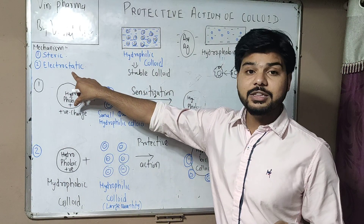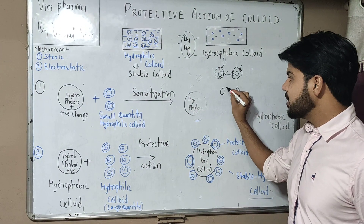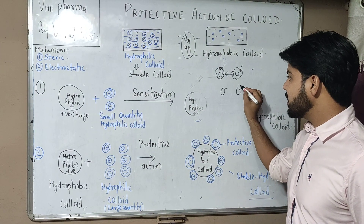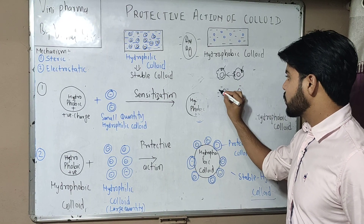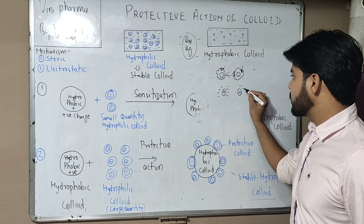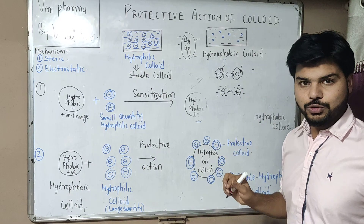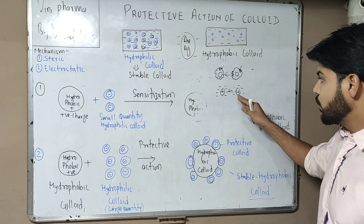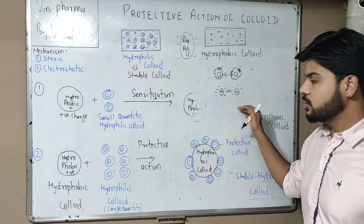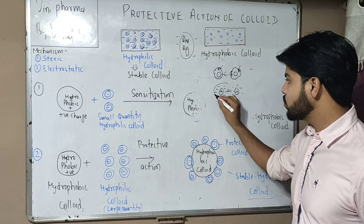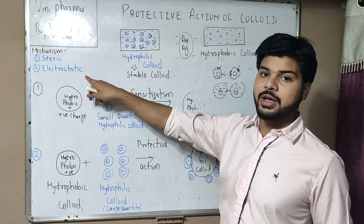The second mechanism is electrostatic. Particles carry charge, and charge develops a repulsion force. According to DLVO theory, in particles there is a repulsion force creating a high potential energy barrier, keeping particles separated due to their charge. This is called electrostatic stabilization.